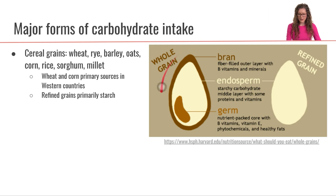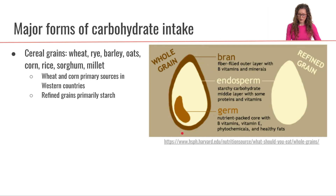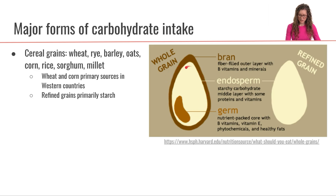What does that mean? Over here we have a picture comparing a whole grain from a refined grain. In general there are three different parts of a whole grain: we have the outer husk which is called the bran, we have the endosperm, and then we have the germ, which is like the little seed. The bran is where we're going to have a lot of fiber, and there are also some B vitamins and minerals. The endosperm is mostly starch, and the germ is where we have more B vitamins, vitamin E, phytochemicals, as well as some healthy fats.